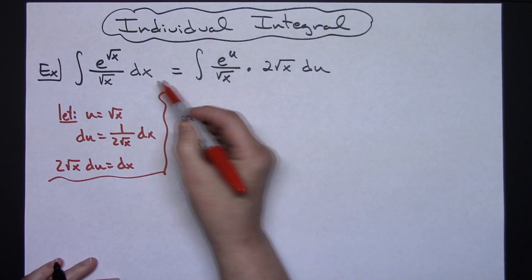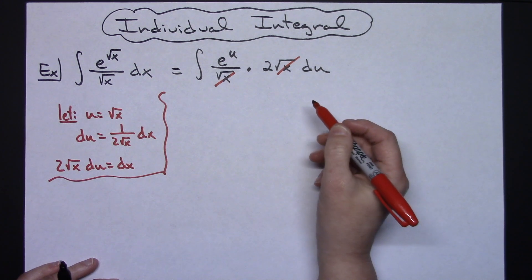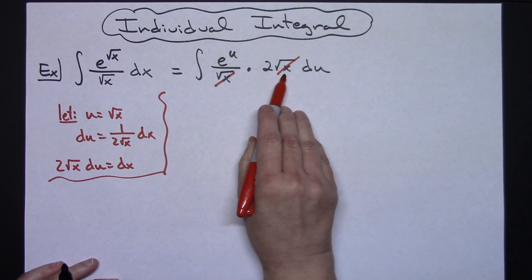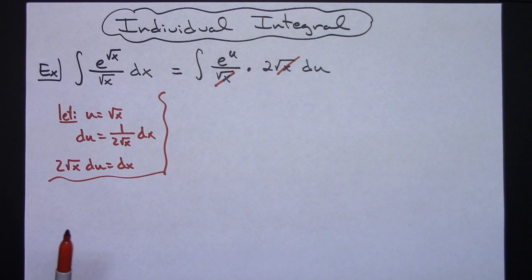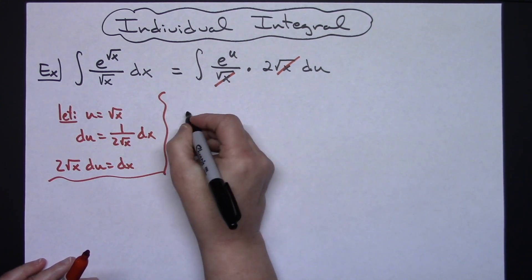Okay leaving that and not replacing the u allows me to cross out the 2 square root of x's. If I replace the u here then I would also need to replace the u there. Okay now I'm going to take this 2 and pull it out in front.